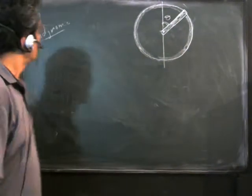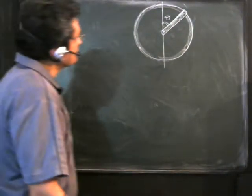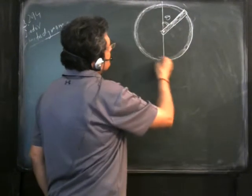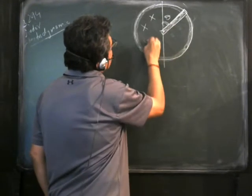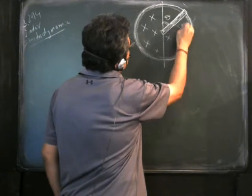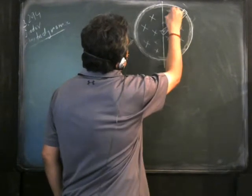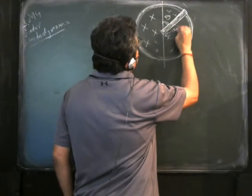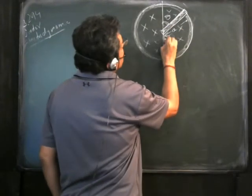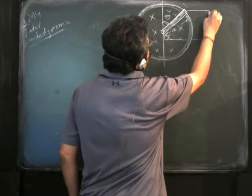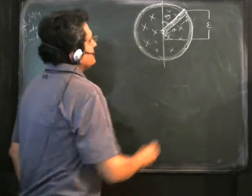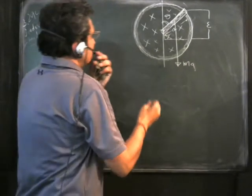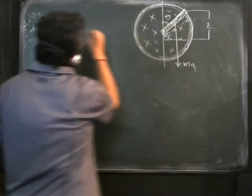We will solve Irodov problem 294, chapter 3, electrodynamics. In this problem there is a loop placed in a magnetic field which is directed into the plane of the board. There is a conductor with length a — the radius of this loop — which is connected to a source providing EMF. This conductor has weight mg.